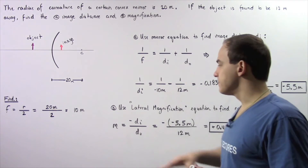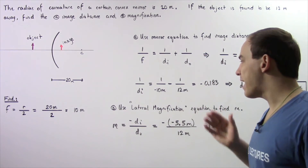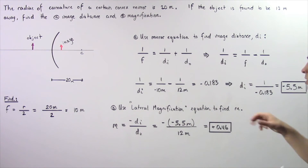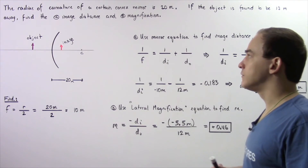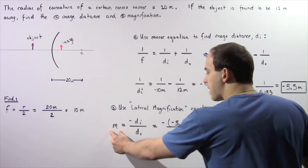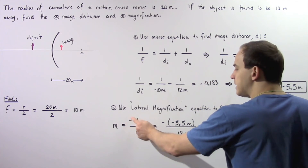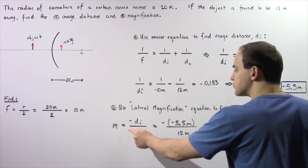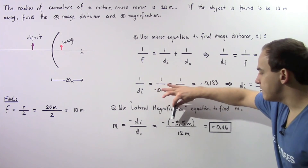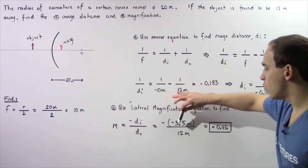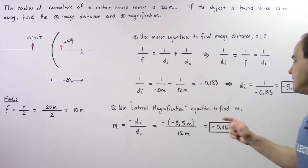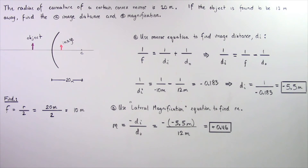Now let's move on to part B. We use the lateral magnification equation — which works for both concave and convex mirrors — to solve for M. The magnification M = −DI / DO. The image distance was −5.5 meters, so negative divided by negative gives a positive: M = 5.5 / 12. The meters cancel, and our magnification is approximately positive 0.46.